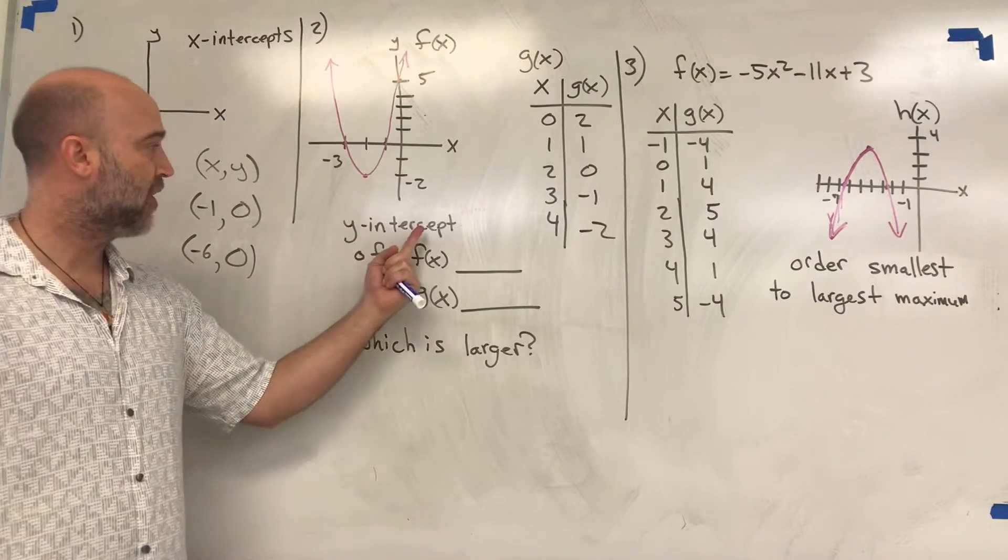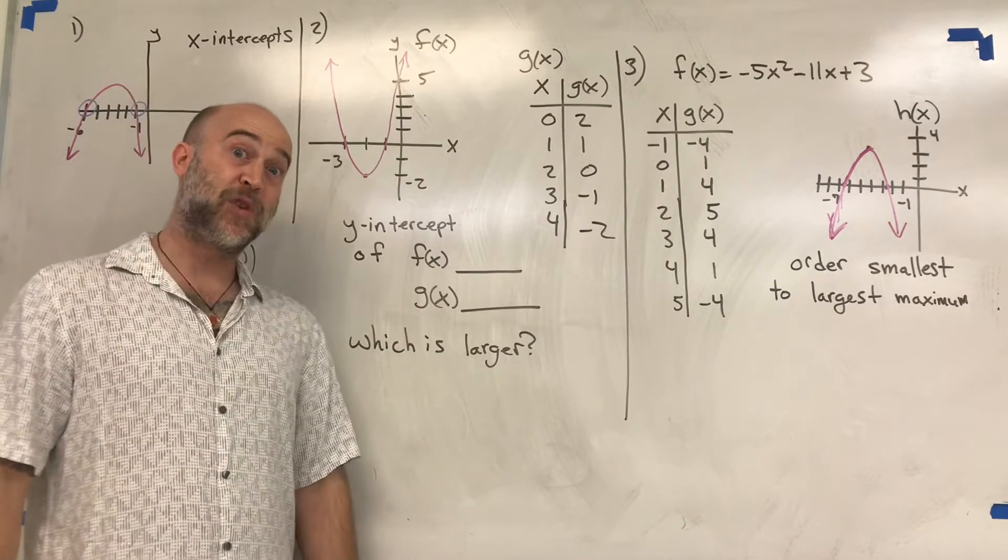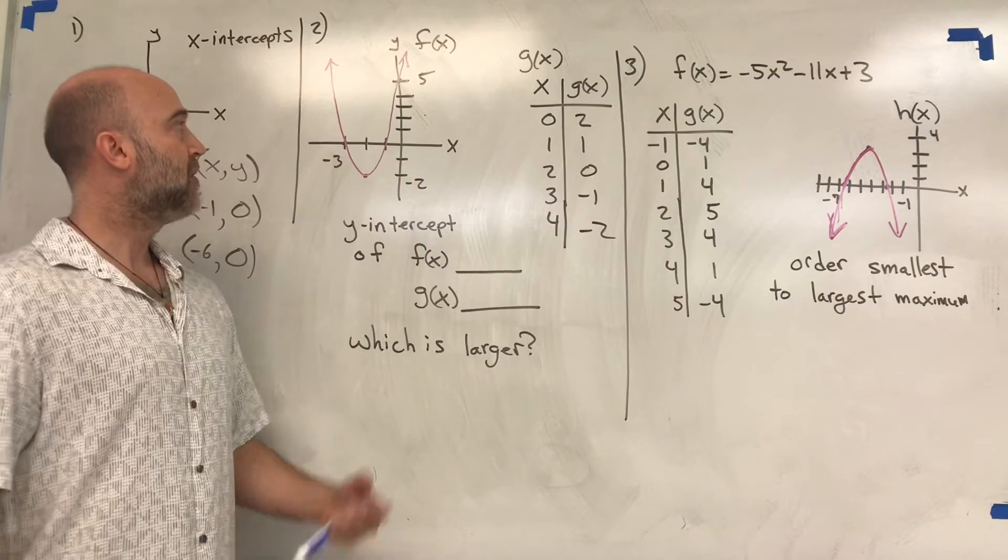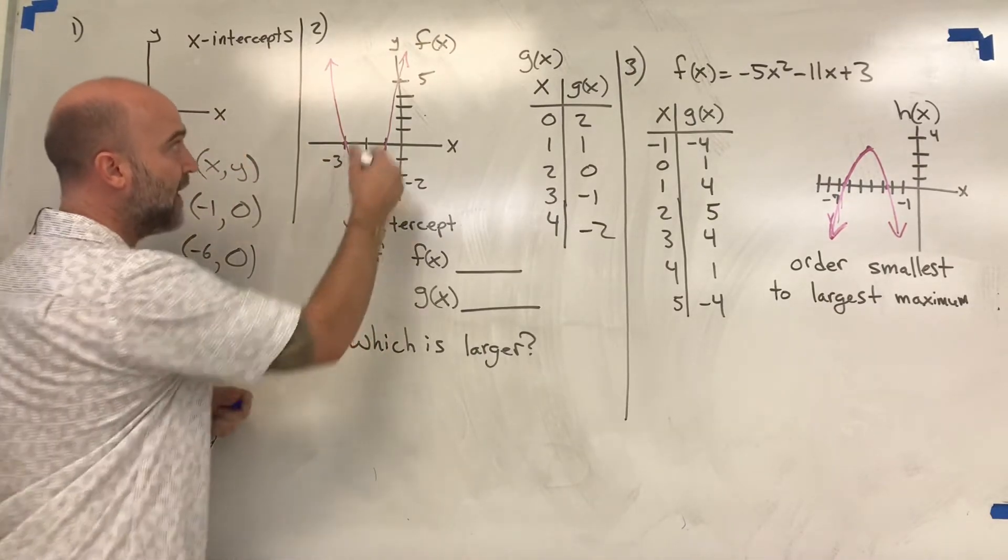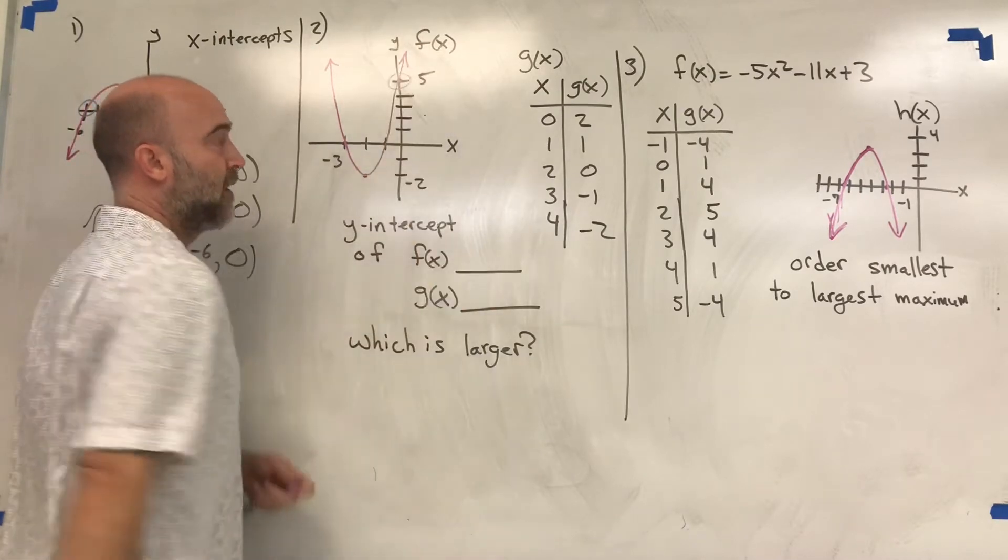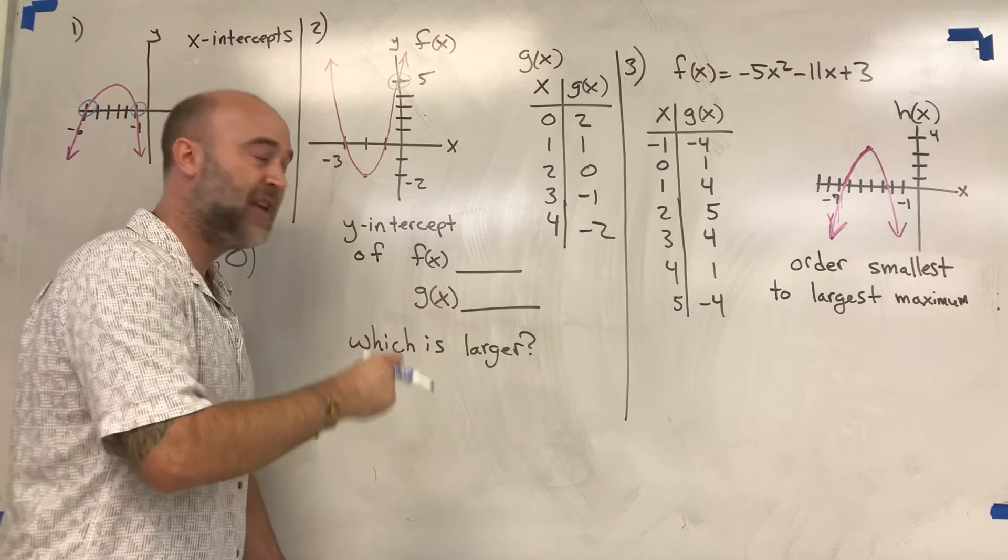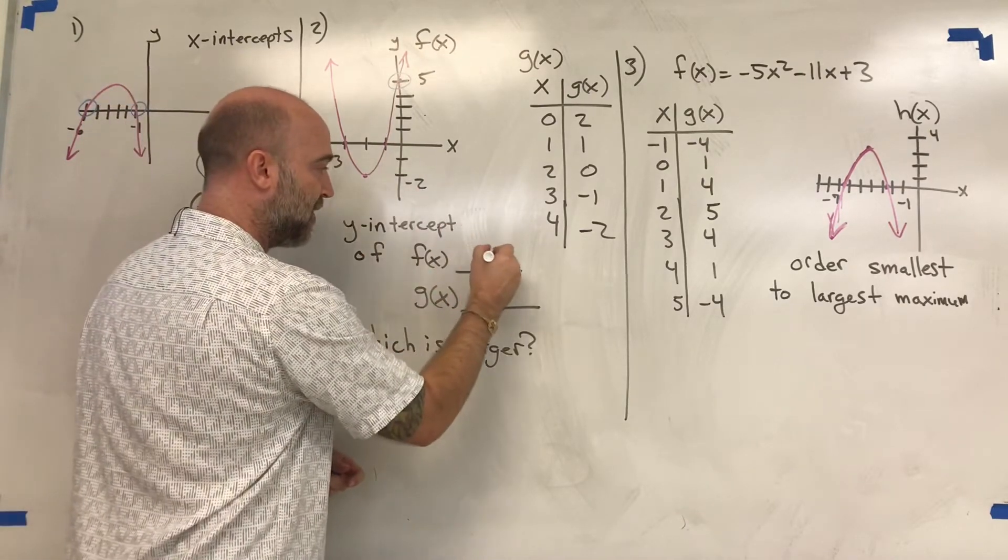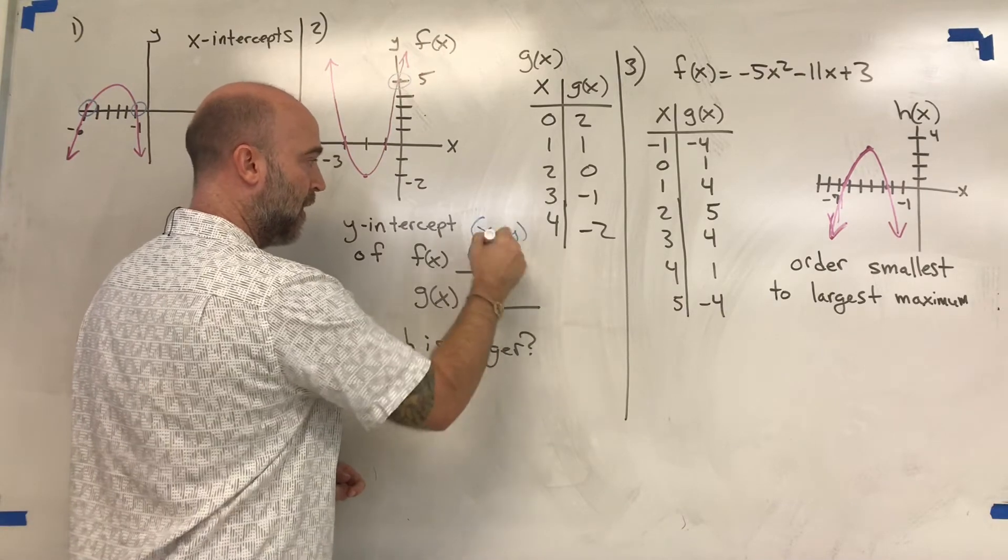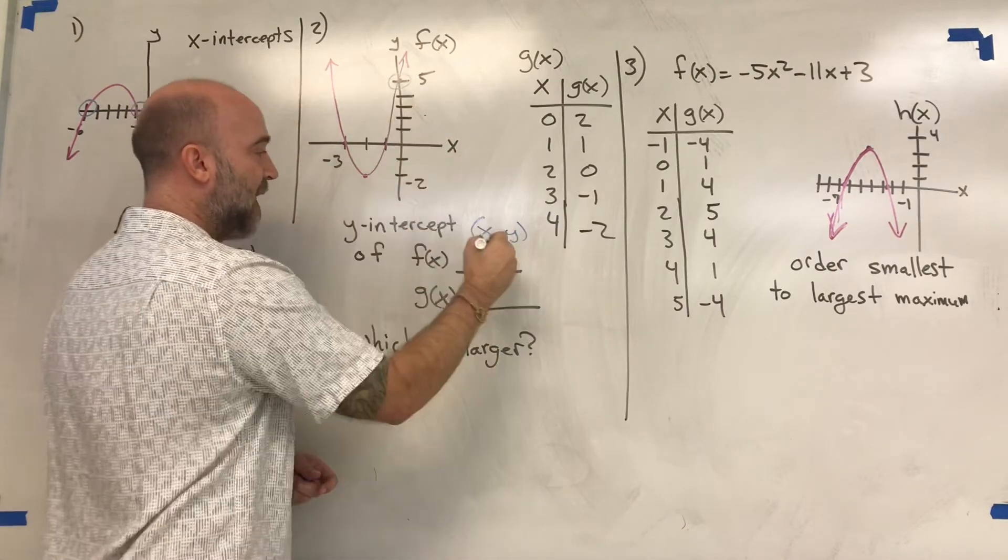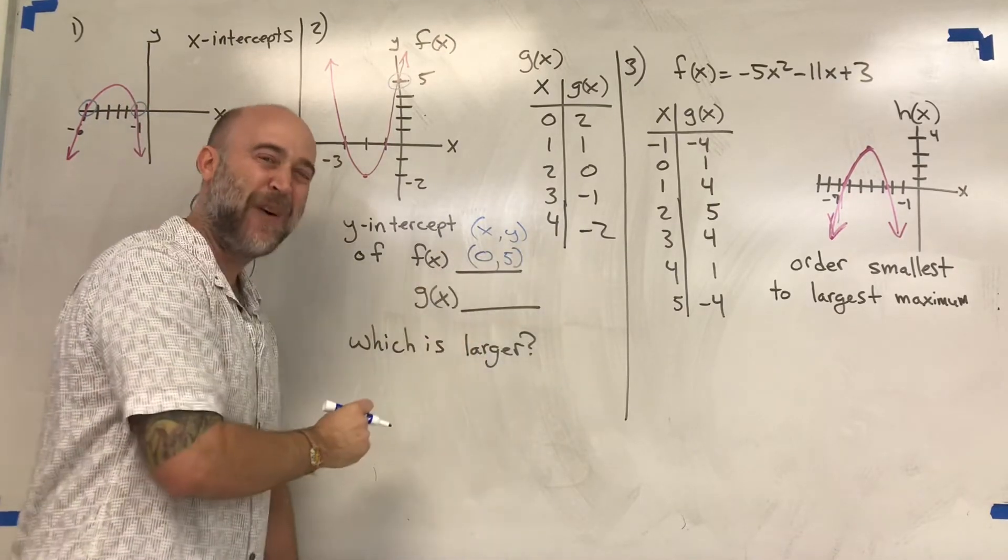Next we're asked to find the y-intercepts of f(x) and g(x), then determine which is larger. Looking at the graphical one first, we have a y-intercept at 5 on the y-axis. Remember, a y-intercept means x equals zero. So the y-intercept here is 5.